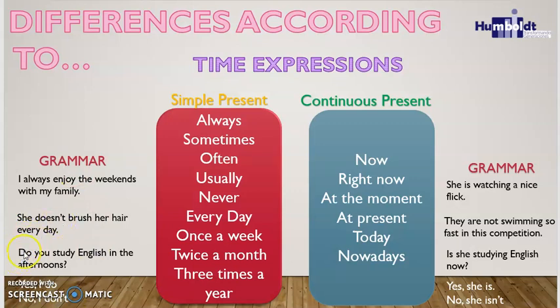Remember that in the simple present we are using the auxiliaries 'do' and 'does' for negative sentences and questions. We also have two possible options to answer in a short way: we can say 'Yes, I do' — that means 'sí' — or 'No, I don't' — that means 'no.'